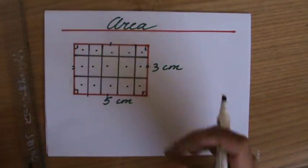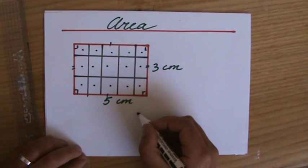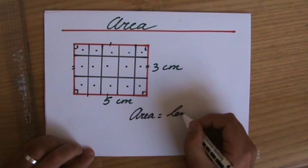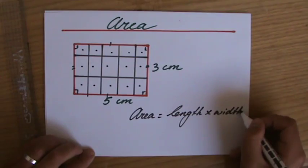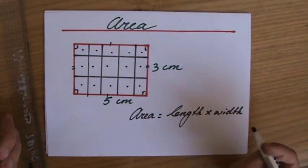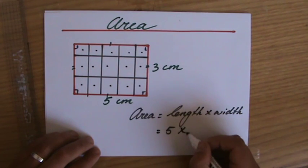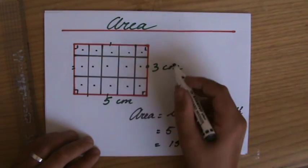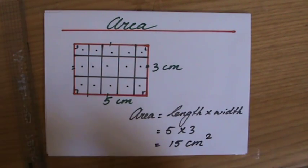Now, am I going to draw lines every time? Am I going to draw these blocks every time? Absolutely not. Why not? Because the area of a rectangle is length times the width, or base times the height. So in this particular case, 5 times 3. Sure, that will be 15. The unit is centimeter squared.